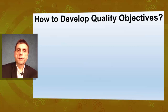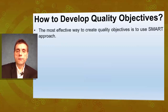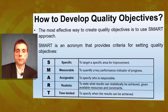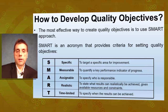So the question is how to develop quality objectives? The most effective way is to use the SMART approach. SMART is an acronym that provides criteria for setting quality objectives. SMART means: S - specific, M - measurable, A - assignable, R - realistic, and T - time limited.